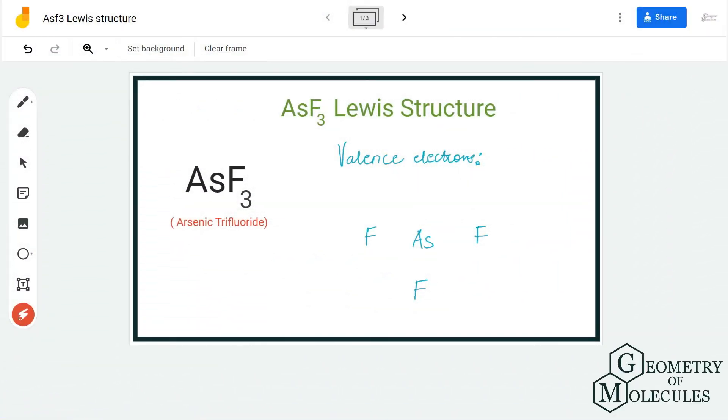Hi guys, welcome back to our channel. In today's video we are going to determine the Lewis structure for AsF₃ molecule. It is the chemical formula for arsenic trifluoride, and to look at its Lewis structure we will first need to know the total number of valence electrons for this molecule.